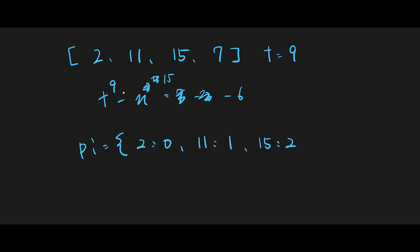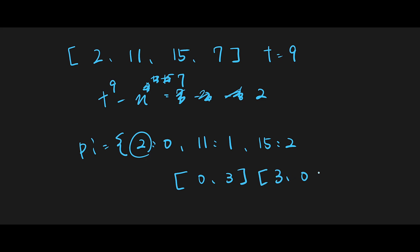Then we find 7. So 9 minus 7 should be 2. We check if we have 2 in the hash map — and we do! It's at index 0. So we can make the target with 7 and 2. That's why we return the current index and index 0. The description says we can return the answer in any order, so we can return [0, 3] or [3, 0]. That is the basic idea to solve this question. Let's get into the code.